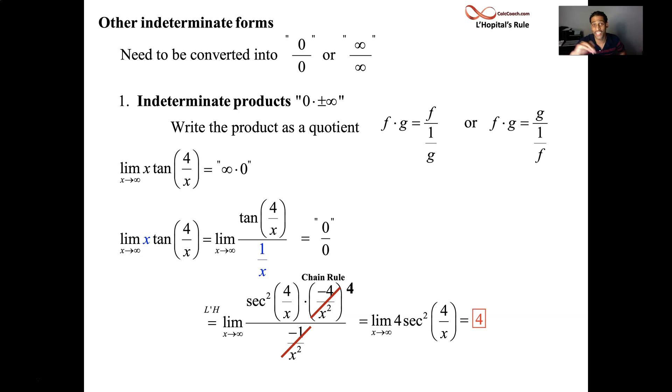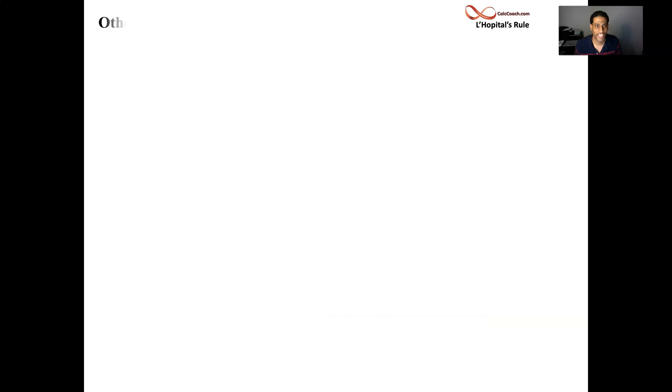The answer is 4. This function is headed to 4 as x goes to infinity. This is a horizontal asymptote. If you take the limit as x goes to infinity and you get a constant, then you have yourself a horizontal asymptote. And we just did our first example of an indeterminate product. So just create a fraction. All right. Great. There'll be many more.